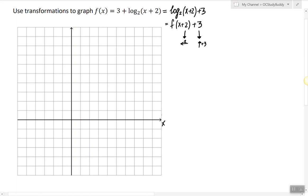The parent function here is logarithm of x base 2, and the graph of the parent function looks like this: at 1 it is 0, at 2 it is 1, at 4 it is 2.